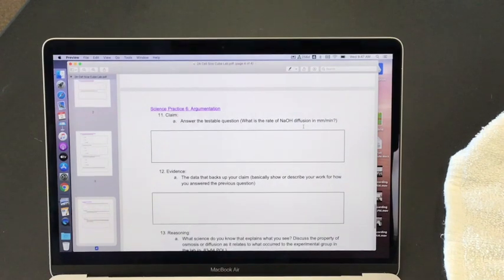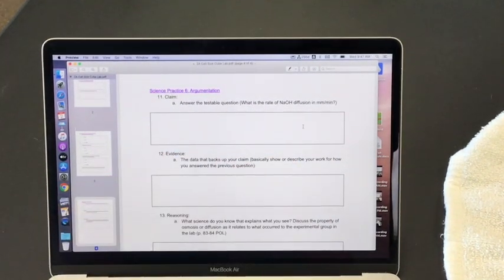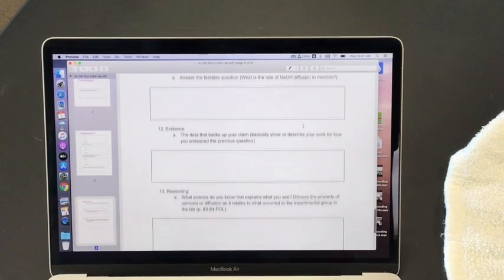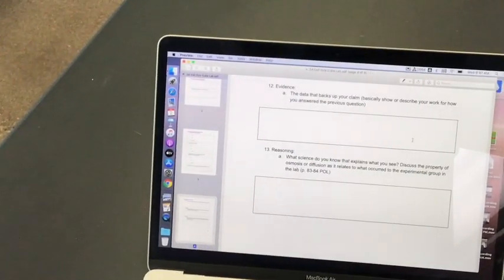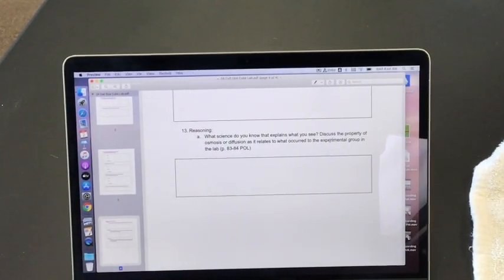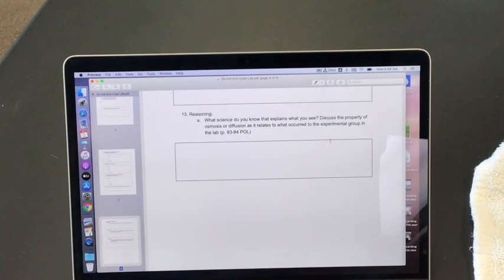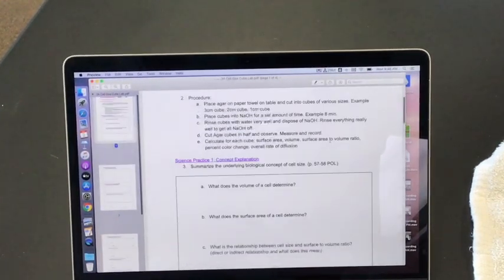All right, and then the science practice six, argumentation: answer the question. Remember the question is what is the rate of sodium hydroxide diffusion? What is evidence from your lab, and the reasoning - what science do you know that explains what you see? Discuss the property of osmosis or diffusion. Now we haven't learned about osmosis or diffusion yet, but those should be terms that maybe you've heard before, even in middle school science, and you could use page 83 to 84 in Principles of Life to help you with that as well.